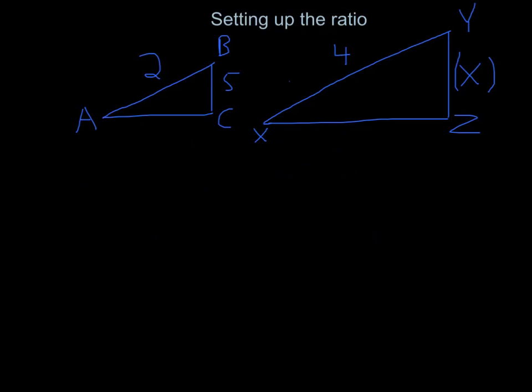So, if we are given two triangles that we are told are in fact similar, we can easily find any missing sides. Here we are given side AB as 2 and BC as 5. Now if we know that side XY is 4, how can we find the value of X, which is side YZ?